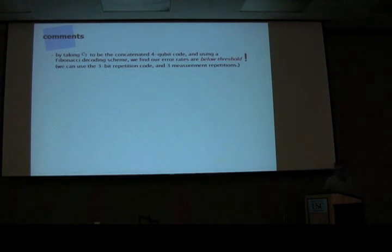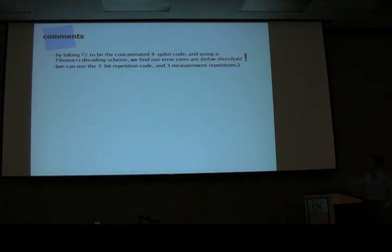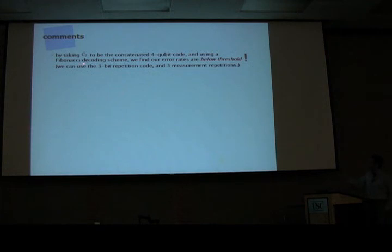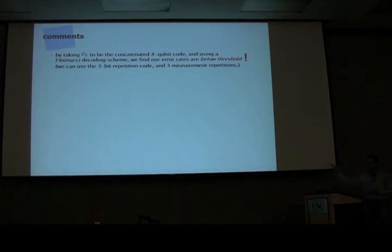The question IBM asked was: are we below threshold? Yes — with the numbers given, these are below threshold. To achieve that, C2 should be a concatenated four-qubit code, use message-passing decoding — a Fibonacci scheme first appearing in Knill's papers — and use a three-bit repetition code at the physical level. With all that, the error rate drops from the physical level toward zero after enough levels of coding, confirming you are below threshold.